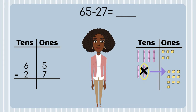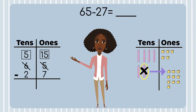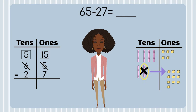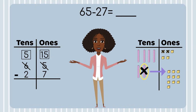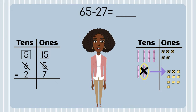How many ones do we have in the ones place now? That's right — 15. We will also show this with our numbers by crossing out the five and putting a 15 on top. We will cross out the six and put a five since we moved a ten out of the tens place. Now we're ready to subtract. Let's subtract the ones place — count with me: one, two, three, four, five, six, seven. How many ones are left? Great — eight. Let's put an eight in the ones place.